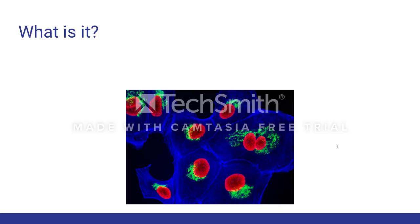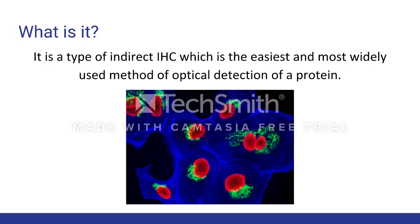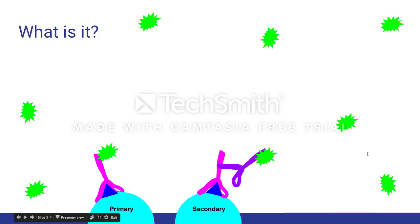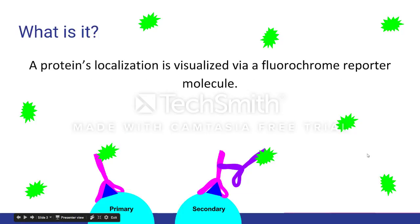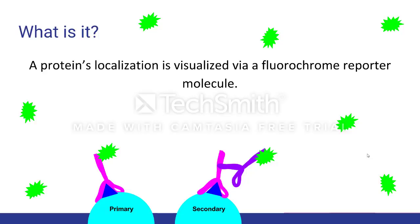First of all, what exactly is immunofluorescence? Well, it is a type of indirect immunohistochemistry, and it is the easiest and most widely used method of optical detection of proteins. In general, immunohistochemistry is utilized to determine the subcellular localization of a protein in a cell or tissue. To elaborate further, immunofluorescence is where a protein's localization is visualized via a fluorochrome reporter molecule.